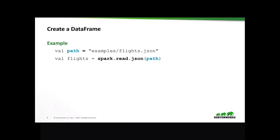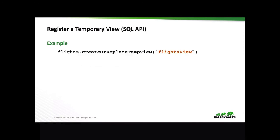To create a simple DataFrame, all I have to do is point to my flights.json file in the examples directory and assign it to my variable path. Then, using the Spark Session, I use read.json pointing to that path to create my flights DataFrame. This will infer the data types from the JSON file, and it already knows the structure based on the formatting of the JSON file itself. To demonstrate different ways of accessing data, I'll create a temporary view called the flights view on my flights DataFrame using createOrReplaceTempView.